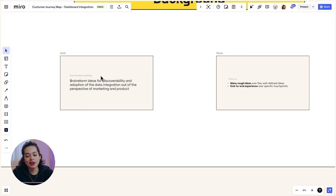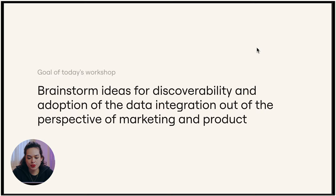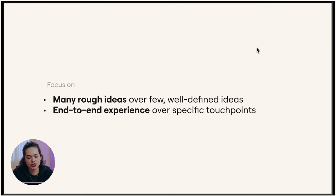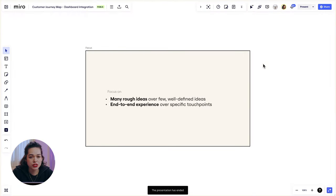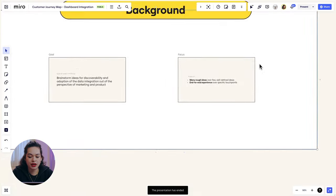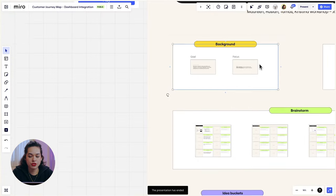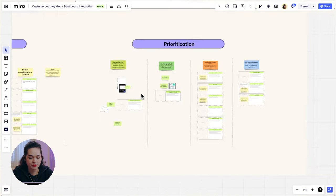In the past, I would have to switch between different tools for the workshop, but here I like that I can present my workshop instructions and background slides in presentation mode in the beginning, and then just easily switch to free panning on the board when we start workshopping.